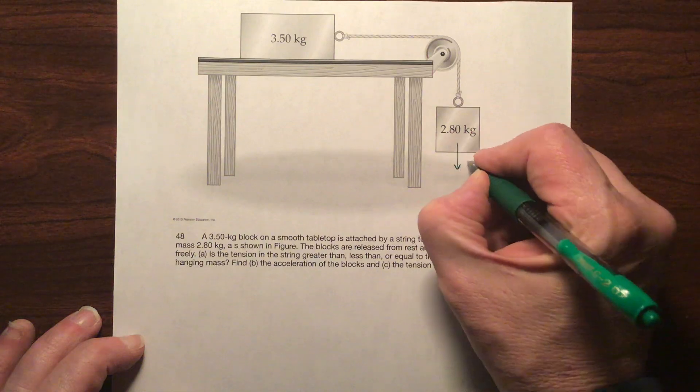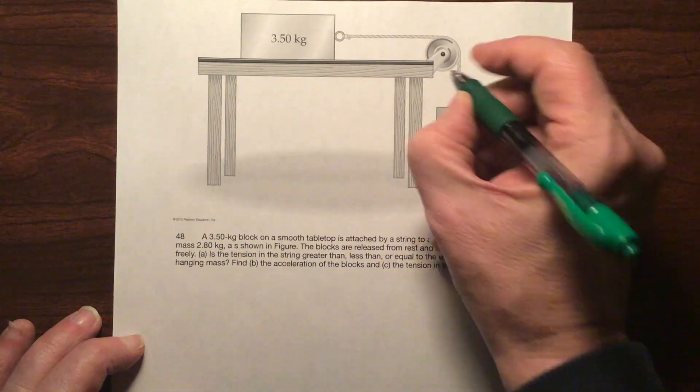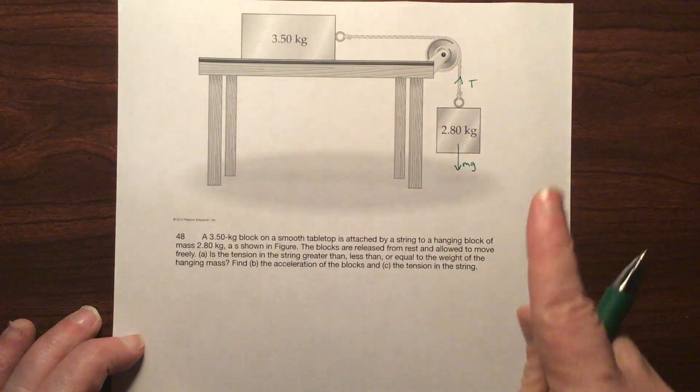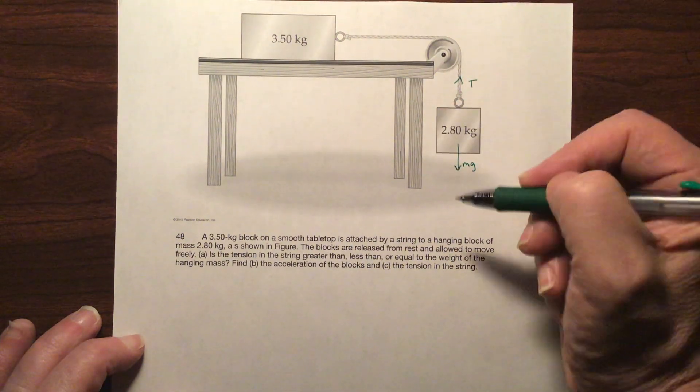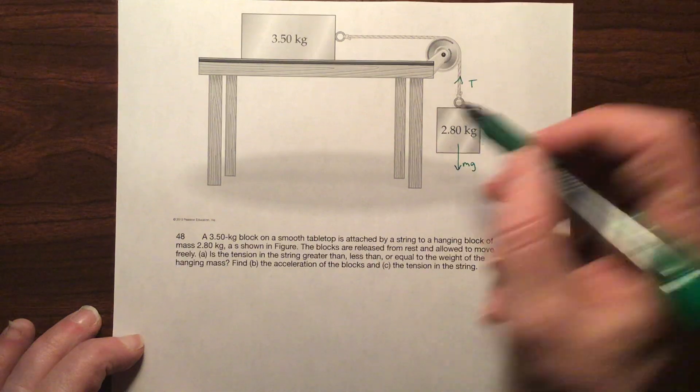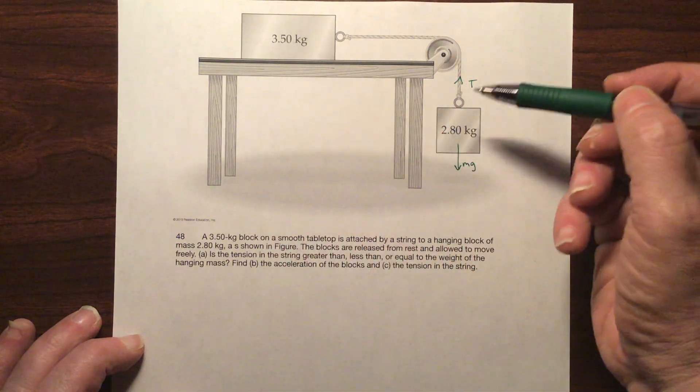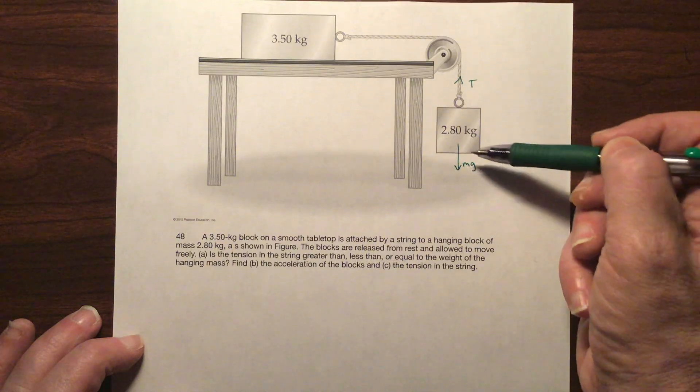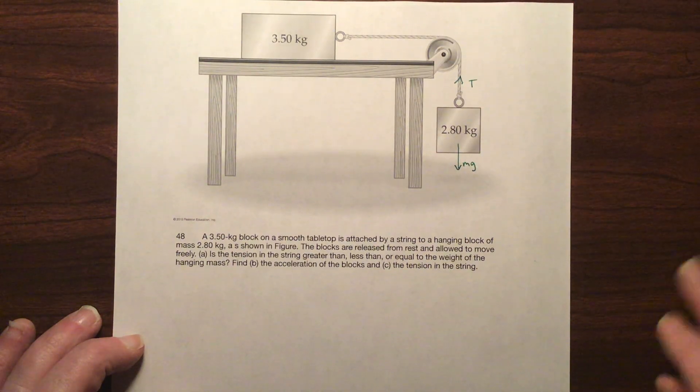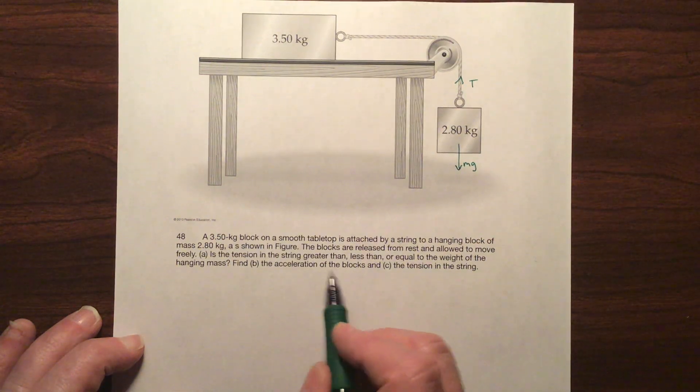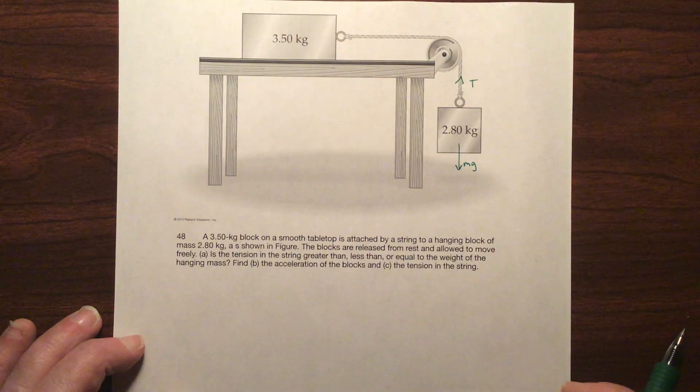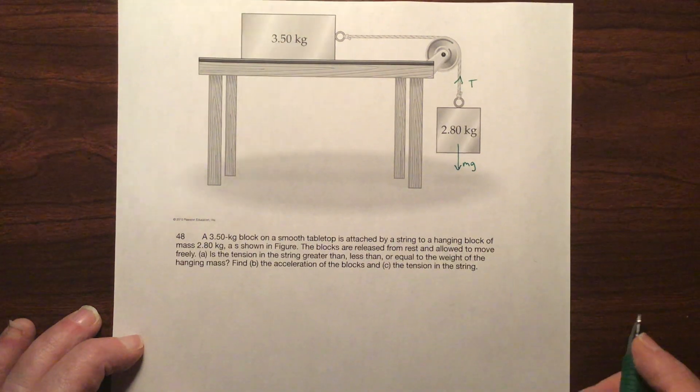So if that's true, then mg is going to be bigger than tension. So if this is the tension in that string, if they were equal, this would not move. So if this were heavy enough so that the tension in the string were equal to the weight, then this would be stationary and it wouldn't accelerate at all. And I suppose the acceleration could be zero, but it just makes me think that they're wanting an acceleration.